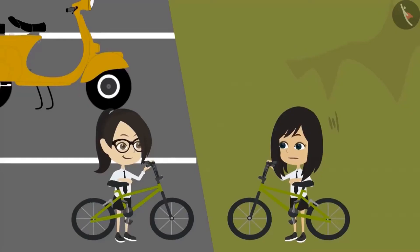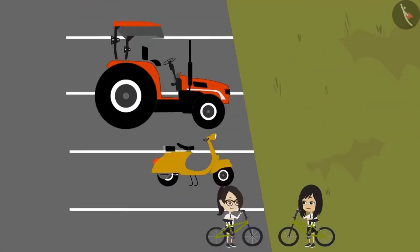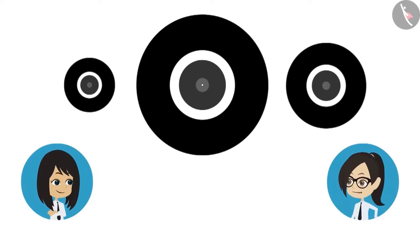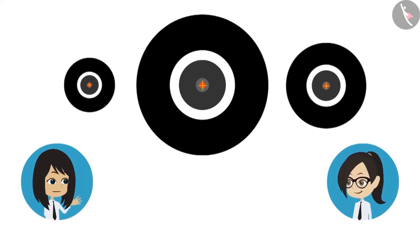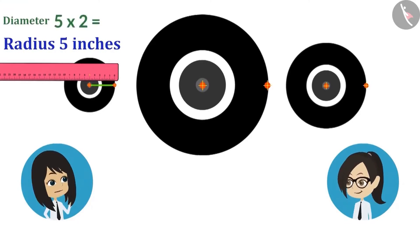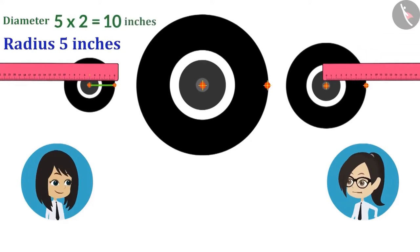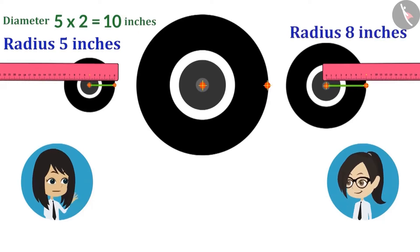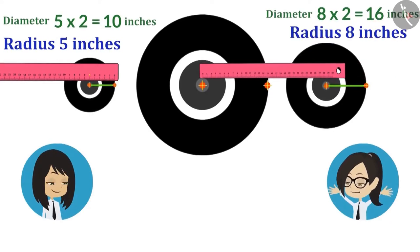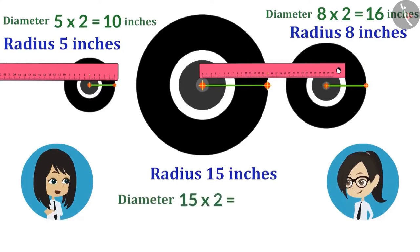Now that we have measured the wheels of the bicycle, why not measure the rest of the wheels as well? Here is the wheel of the scooter, this is the front wheel of the tractor, and this is the tractor's rear wheel. Now let's find the center for all. The radius of the wheel of the scooter is 5 inches, meaning its diameter is 10 inches. The radius of the front wheel of the tractor is 8 inches, meaning its diameter is 16 inches. The radius of the largest rear wheel of the tractor is 15 inches, meaning its diameter is 30 inches.